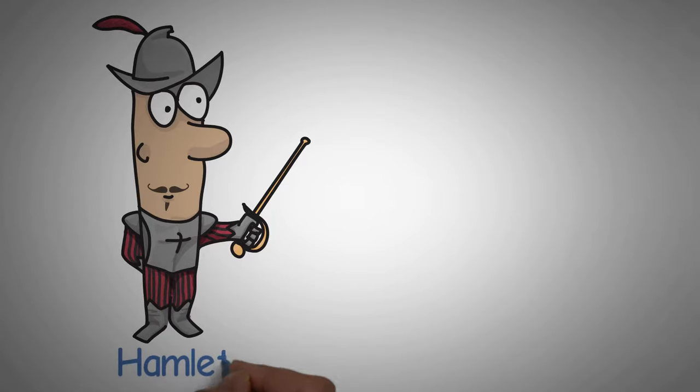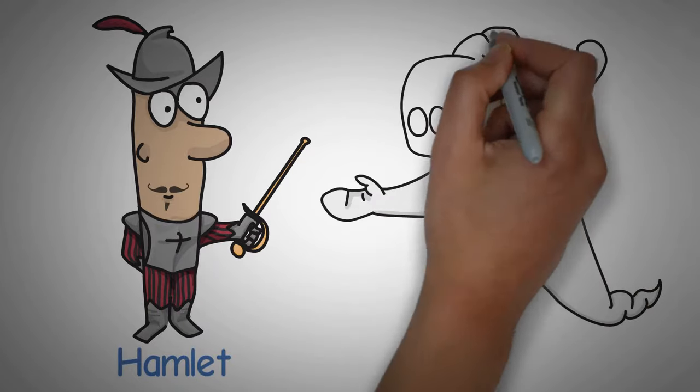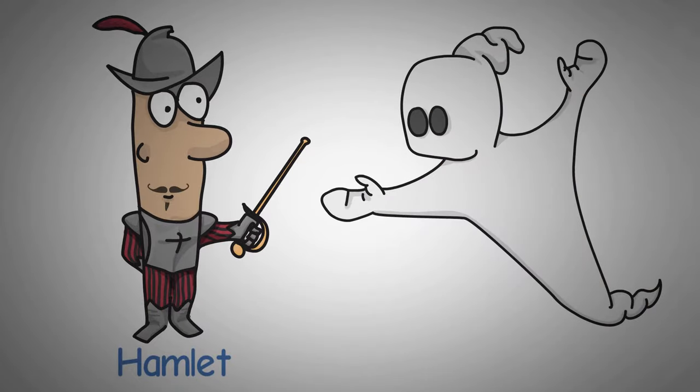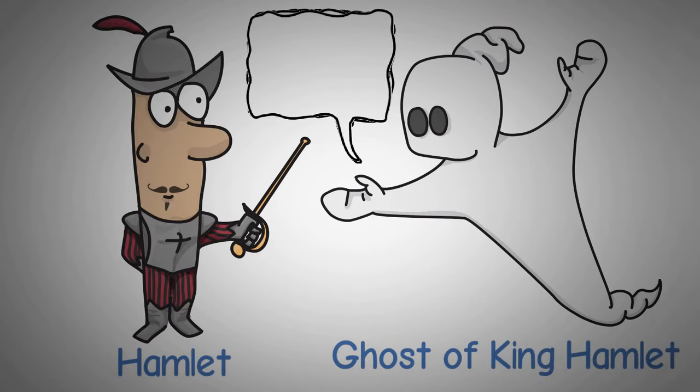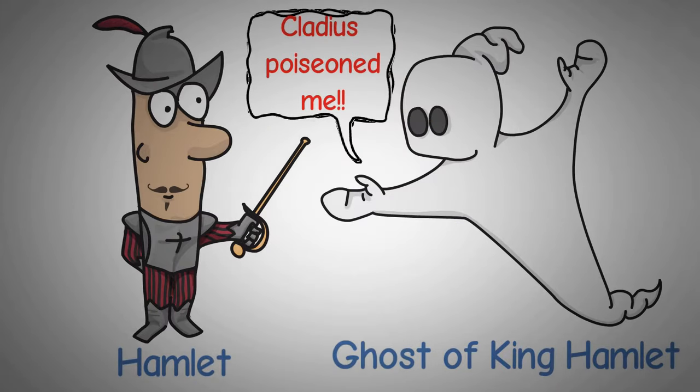Naturally, Hamlet wants revenge for his father but decides to get more details first. Hamlet does this by pretending he has lost his mind and then watching the reactions of all concerned.